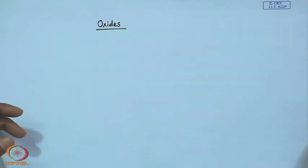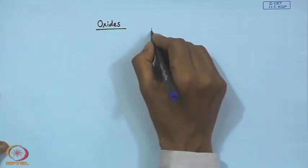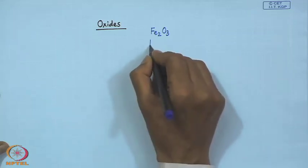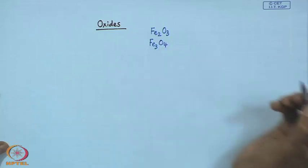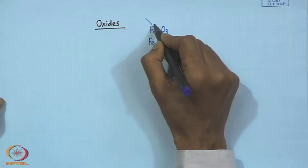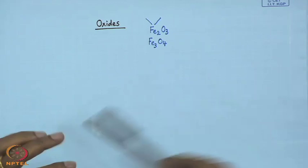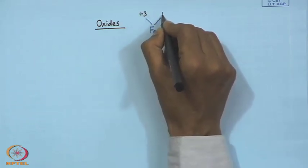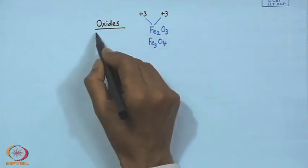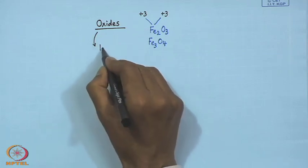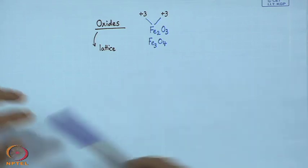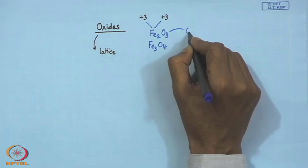Those oxides are specially named as spinels, where we find that if we have a metal oxide like Fe₂O₃ or Fe₃O₄, the number of oxide anions attached to the metal center immediately tells us the corresponding oxidation state of the metal ions present in the oxide lattice. We have the oxide lattice where several oxide anions are closely packed in the solid state.